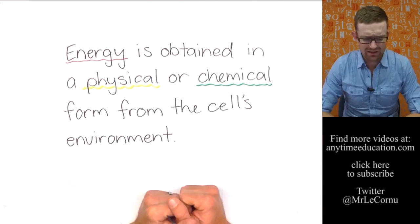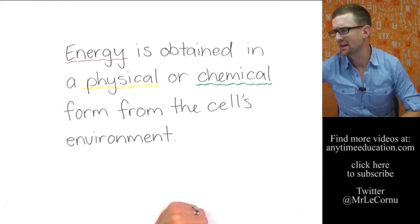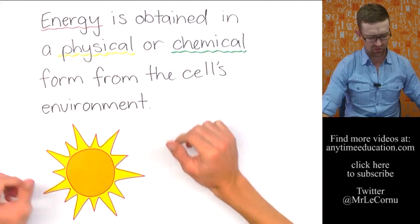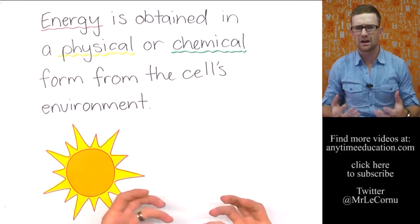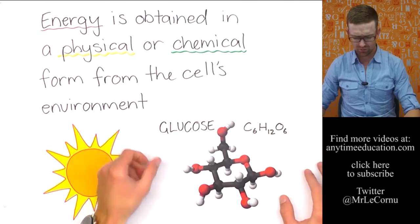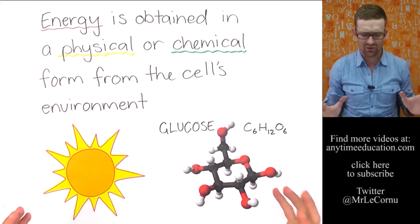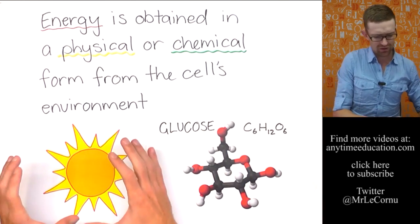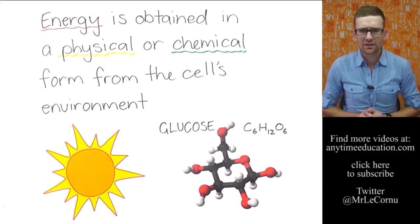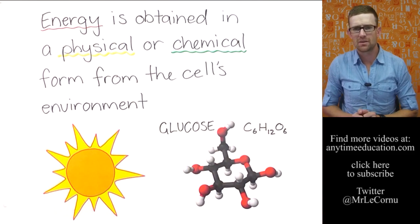Well, energy is obtained in either a physical or a chemical form from the cell's environment. The physical form of energy that we're talking about is sunlight. It's got the sun there to remind you of that. The chemical form of energy that we're talking about are complex organic compounds, such as glucose. Just bring in glucose here: C6H12O6, that's our glucose molecule. So energy is obtained from the cell's environment in either the physical form or the chemical form. And only certain types of cells can harness that physical form of energy and transform it into the chemical form of energy.